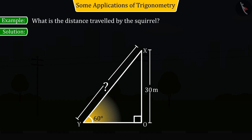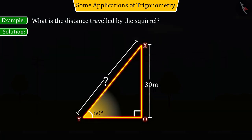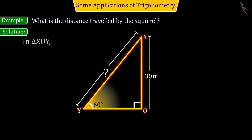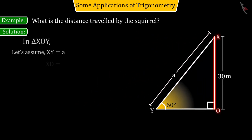Let us first assume that in the right-angled triangle XOY, the length of the string XY is A. And XO equals 30 meters and the value of theta is given as 60 degrees, while OY is unknown.